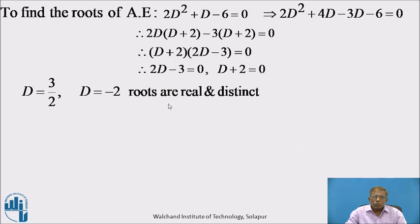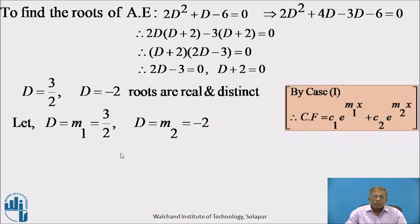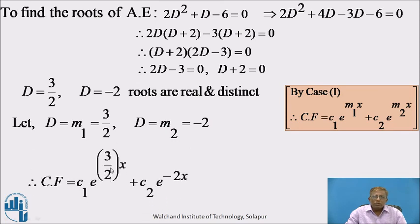These are two roots which are real and distinct. Let m₁ = 3/2 and m₂ = −2. Using Case 1 of CF, with two roots we take two constants c1 and c2. Hence CF = c₁e^((3/2)x) + c₂e^(−2x) is the complementary function.